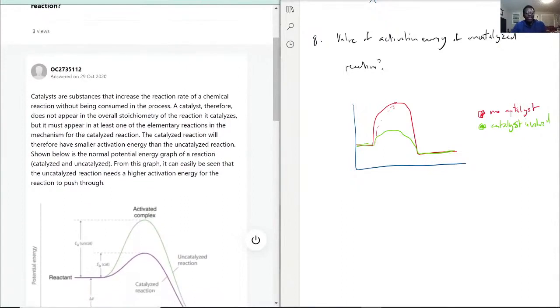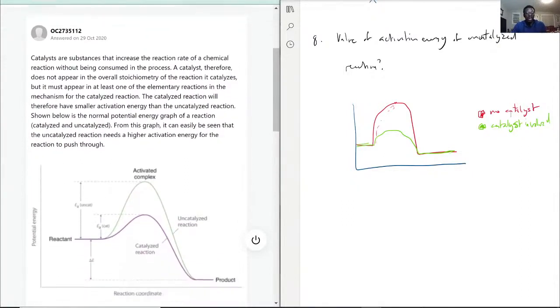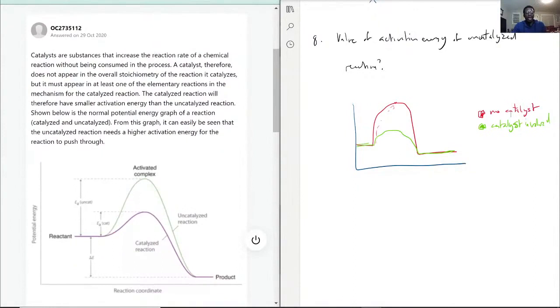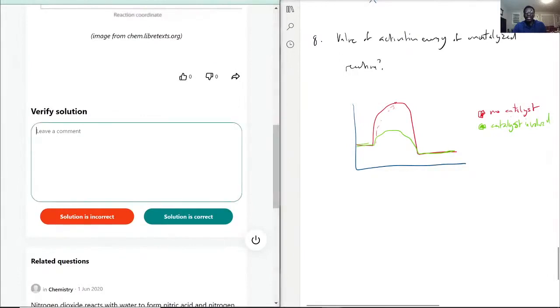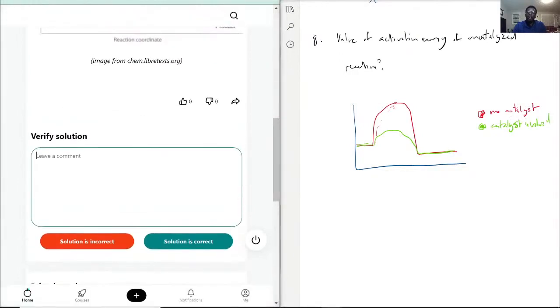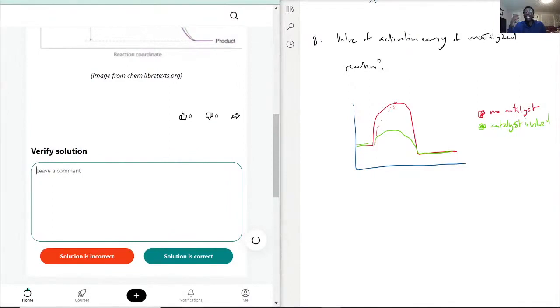So, the catalyst does not appear in the overall stoichiometry. That's true. The catalyzed reaction would therefore have a smaller activation energy. So from this graph, you can see here, catalyst reaction, which is correct. It's a lower activation energy than without a catalyst, as you can see here. All right, so that is pretty much what an uncatalyzed reaction has - relative to the catalyzed reaction, there is more energy needed for it to be activated. So this is correct.